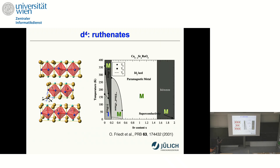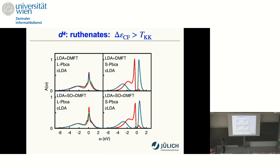Briefly regarding d4 ruthenates: Ca2RuO4 is analogous to d2. However, the high-temperature phase is metallic. There are two structures: the Pbca structure which is insulating, and a metallic phase at high temperature. In DMFT with spin-orbit coupling, the high-temperature structure is always metallic and the low-temperature structure is insulating with a small gap and is fully orbitally polarized. So we are again in this regime: as soon as we enter that structure, the polarization is complete.